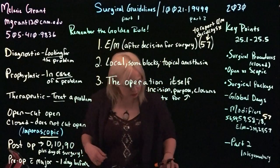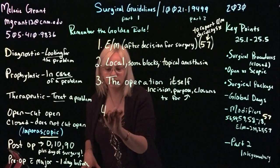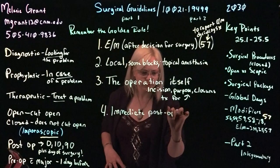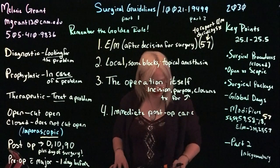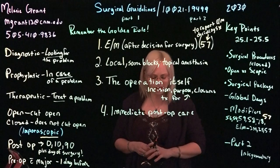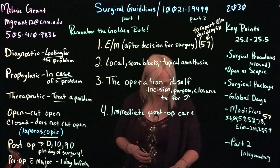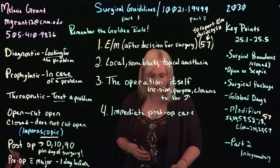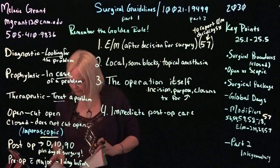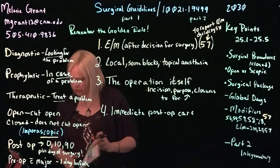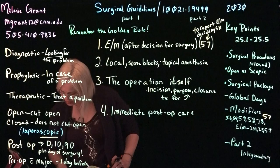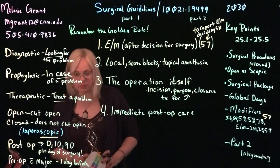Number four is immediate post-op care. This covers the assessment of the patient after or during recovery and any additional decisions as part of that immediate care, not including additional trips to the OR. If the patient ends up having to go back to the OR on the same day, that would be available for billing and you would typically include modifier 59 or an X modifier. Modifier 78 — unplanned return trip during the post-operative period — would not be used on the same day.